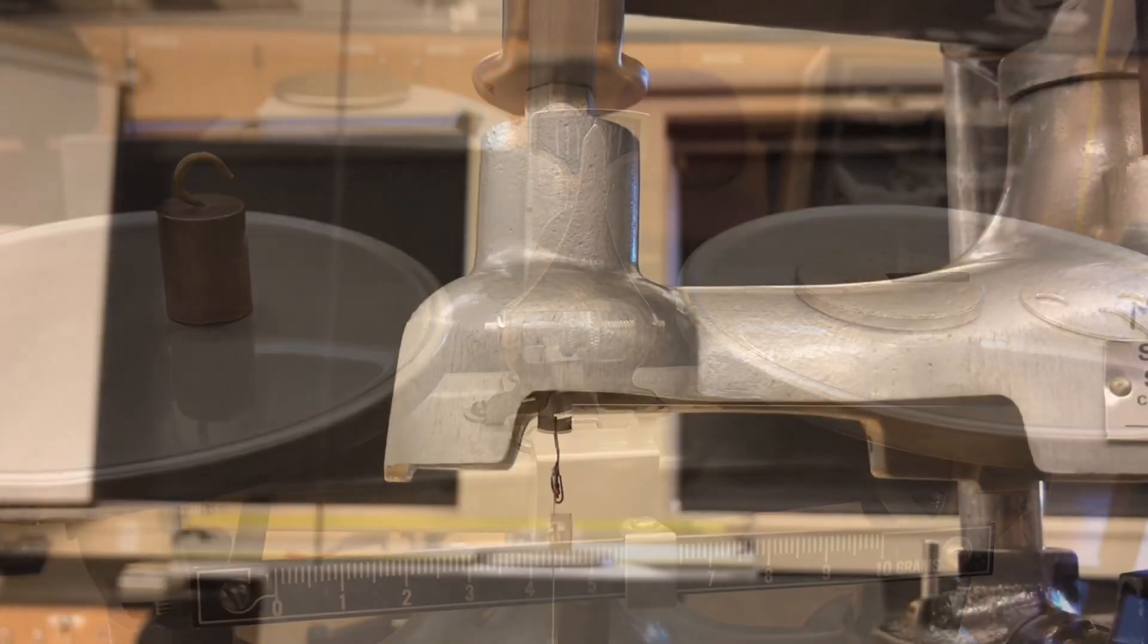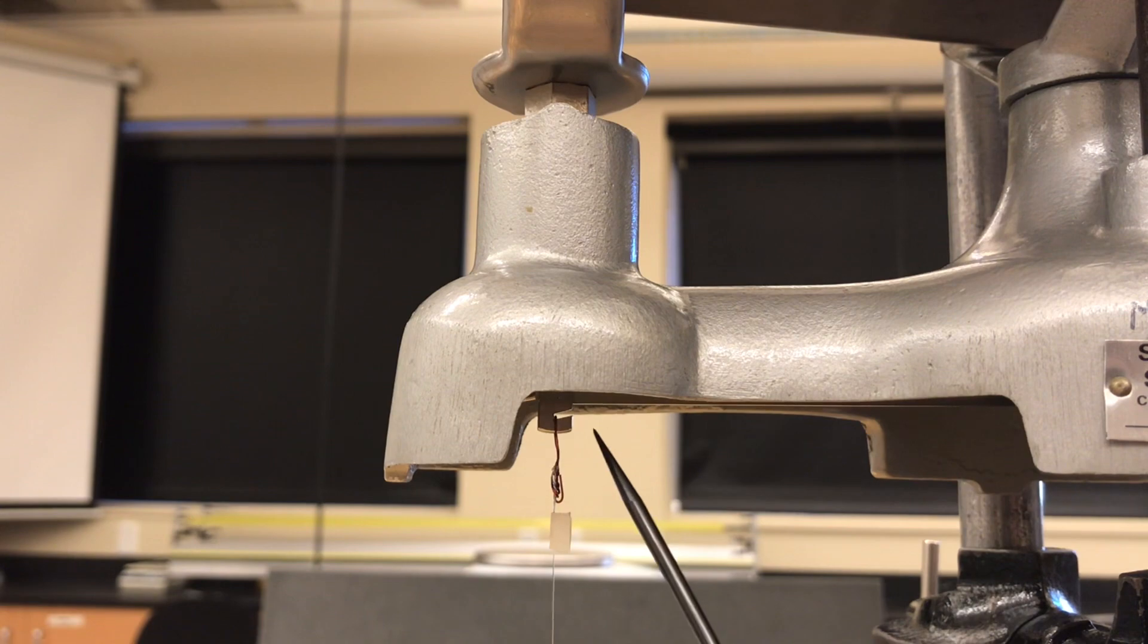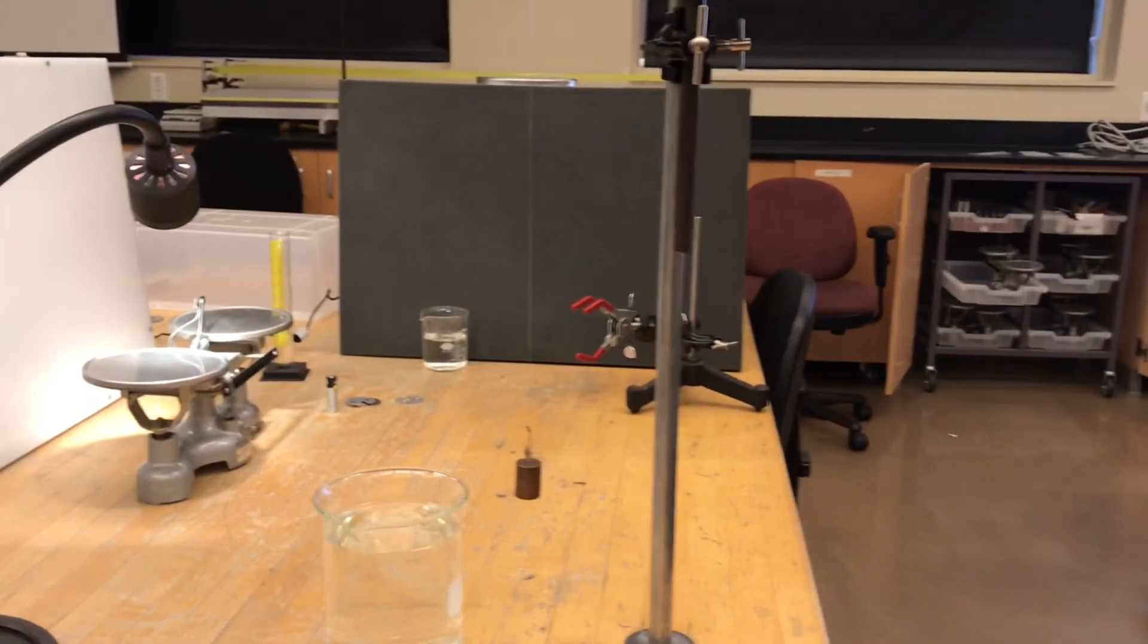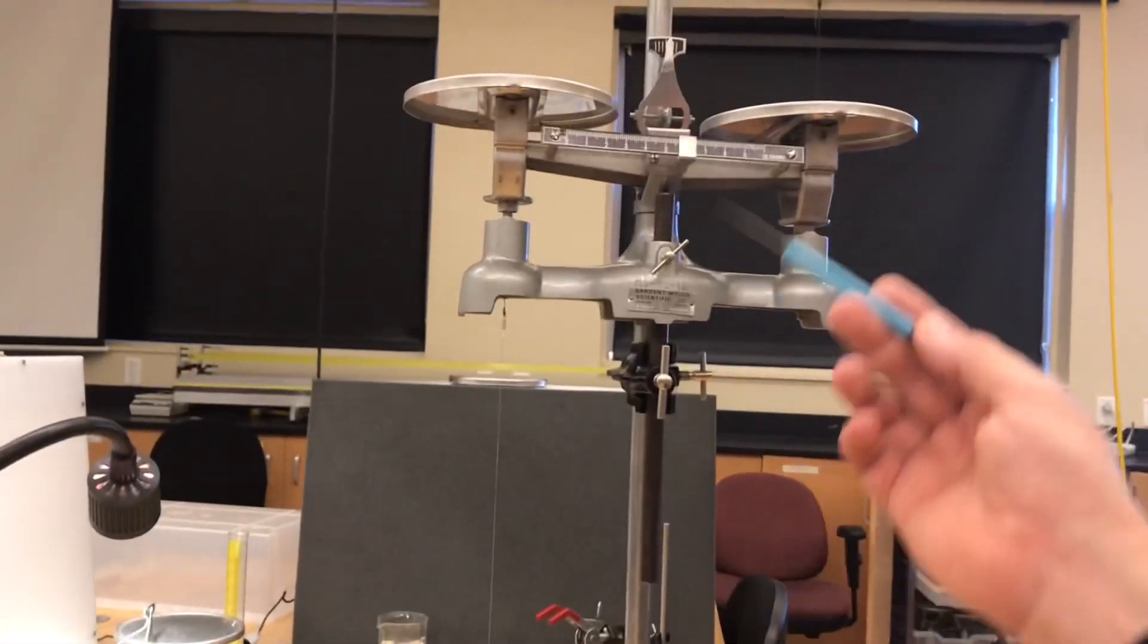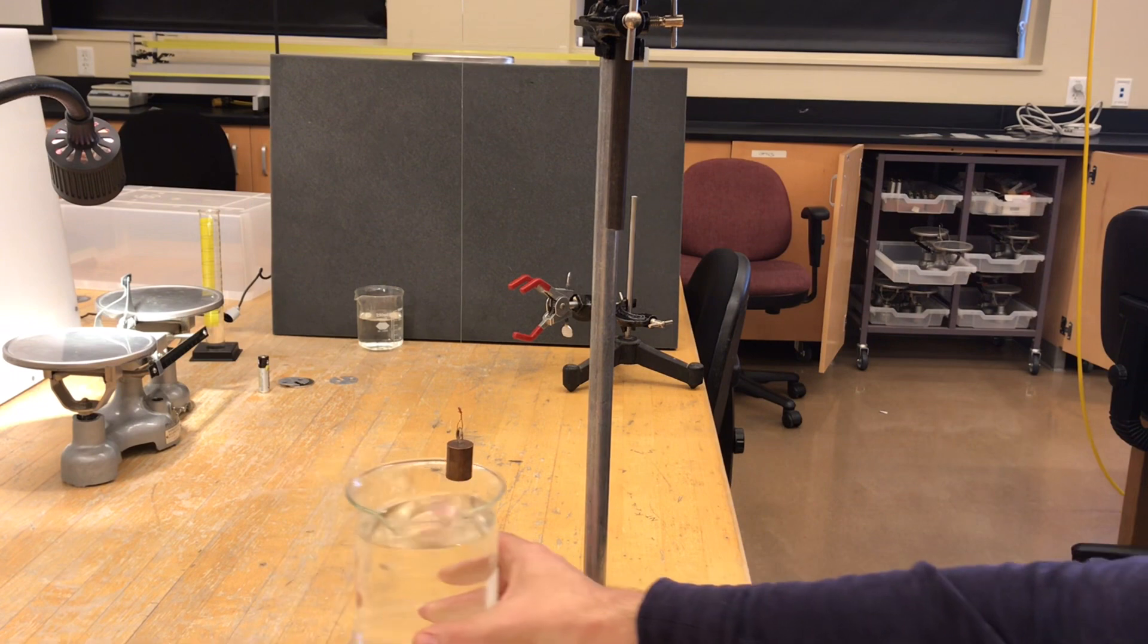The pan on the left is also connected to a hook underneath. You can see the balance is just as well with the copper cylinder hanging suspended from that hook. Now I can submerge it in water and weigh it this way.